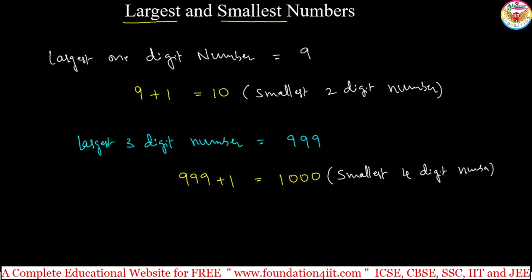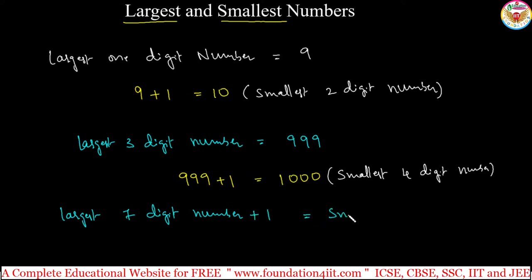Now, without even calculating, we can say: for example, largest seven-digit number plus 1 is the smallest eight-digit number. Same way, largest three-digit number plus 1 is the smallest four-digit number, and largest seven-digit number plus 1 is the smallest eight-digit number. We can conclude this pattern.